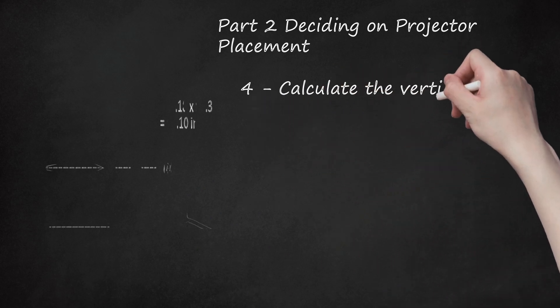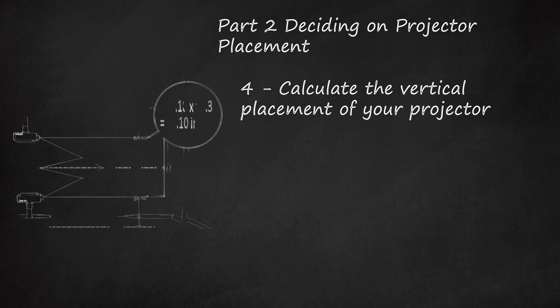4. Calculate the vertical placement of your projector. To calculate your projector's ideal vertical placement, follow this formula: screen height × offset percentage = distance of lens above or below center of screen.